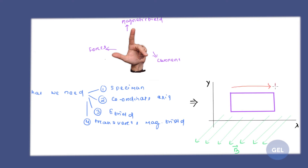Now, if you flow a current from left to right through the specimen, instead of saying current, we can say the electric field direction will be from left to right. Now apply Fleming's left hand rule here.